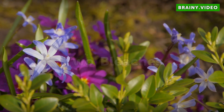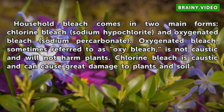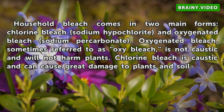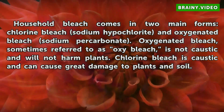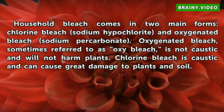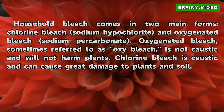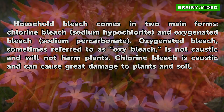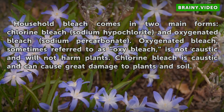Household bleach comes in two main forms: chlorine bleach (sodium hypochlorite) and oxygenated bleach (sodium percarbonate). Oxygenated bleach, sometimes referred to as oxybleach, is not caustic and will not harm plants. Chlorine bleach is caustic and can cause great damage to plants and soil.